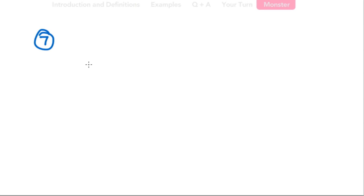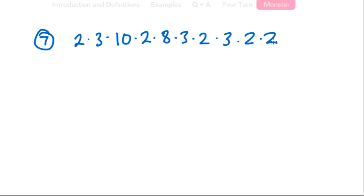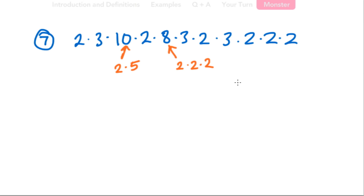Here goes for the monster problem — this is question number 7. Your mission is to write this number in exponential form. A clue: there are a couple of answers that would probably be acceptable. You can also possibly rewrite this number as 2 times 5, and rewrite another number as 2 times 2 times 2, and see if that changes anything. That's number 7 — the monster problem.